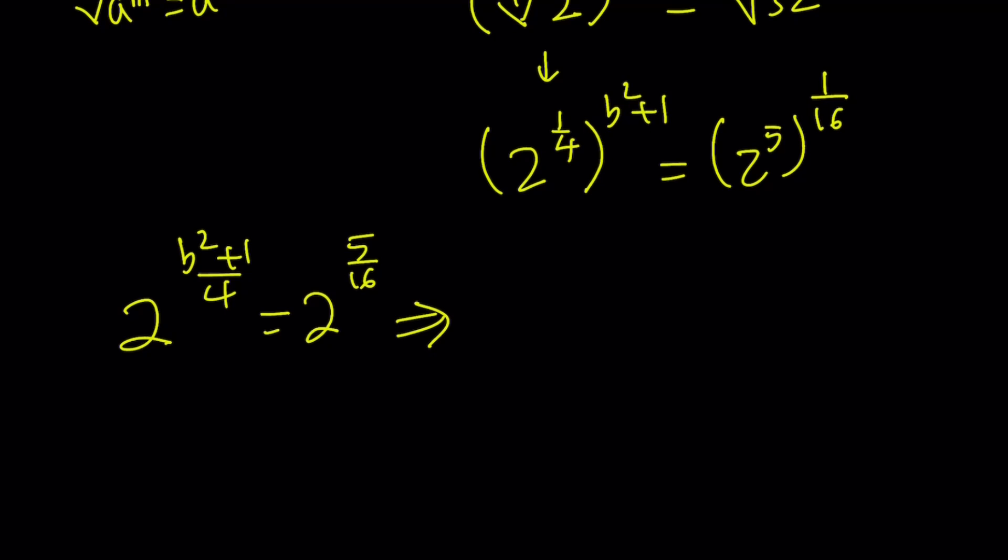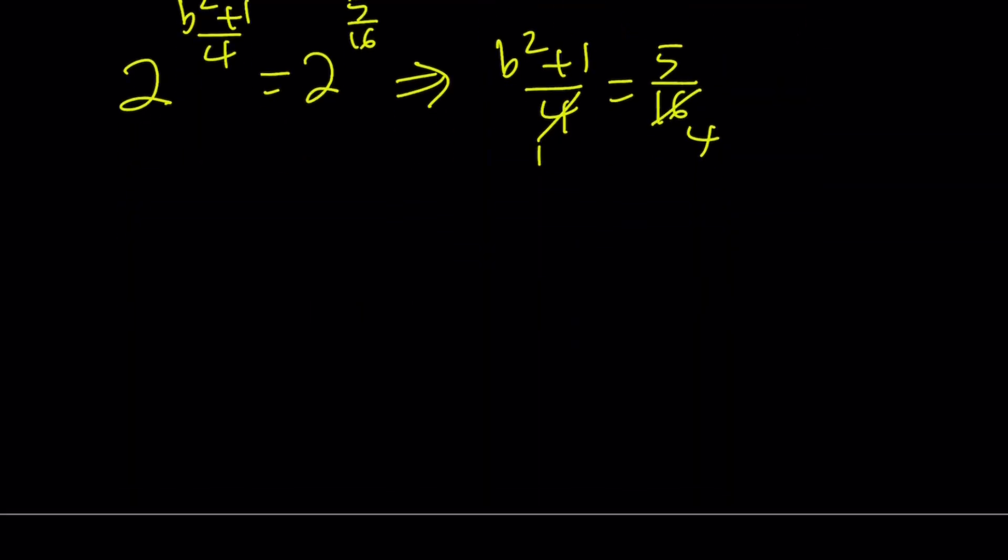From here, we get the following equality: b squared plus 1 over 4 equals 5 over 16. You can kind of cross-multiply, I mean cross-cancel here, 1 and 4, and then cross-multiply next. 4b squared plus 4 equals 5, and then this should give you 4b squared equals 1.